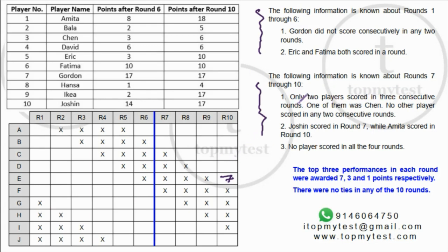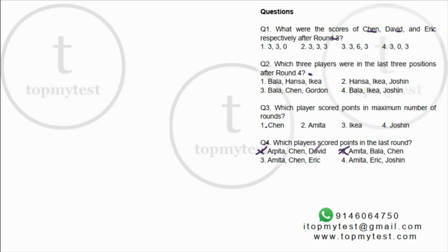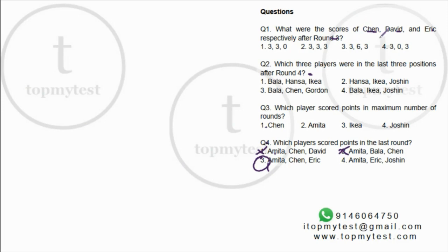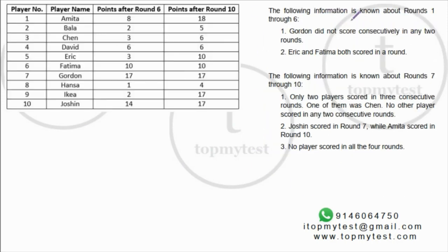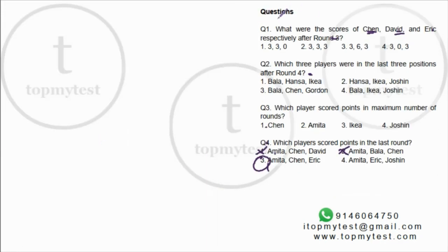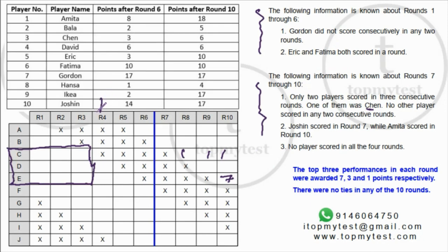It is given that only two players scored in three consecutive rounds, one of whom is Chen. Chen's score went from 3 to 6 across three rounds, scoring 1 each round — so Chen is one of the two. Chen should appear among the answer options, pointing to option 3. That solves one question. Remaining questions: scores of Chen, David, and Eric after round three; which three players had the last three positions after round four.